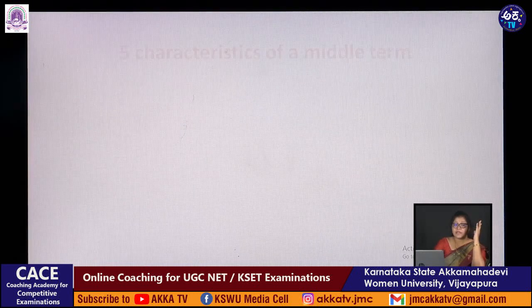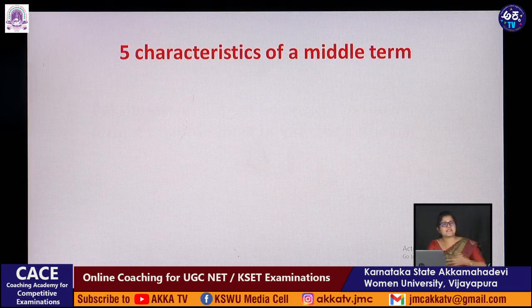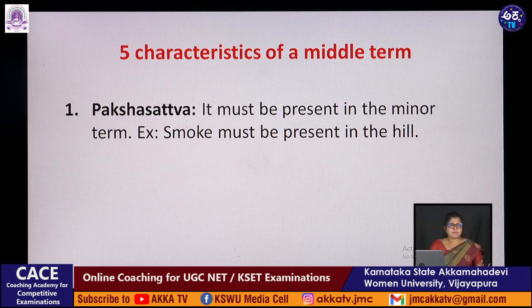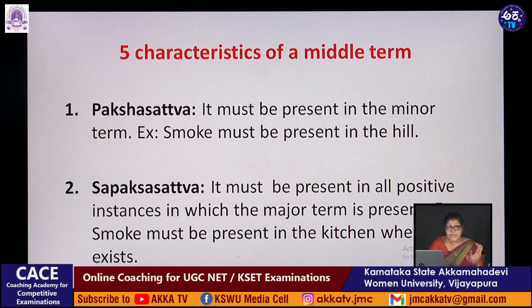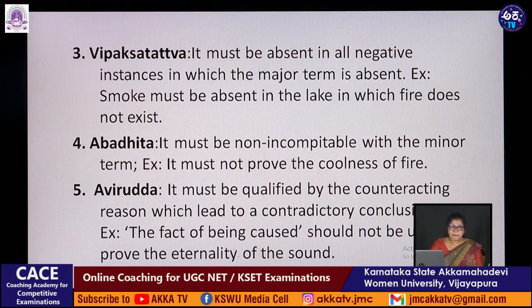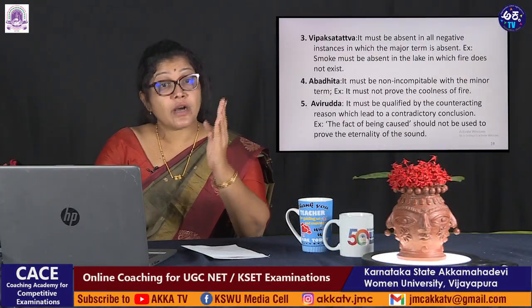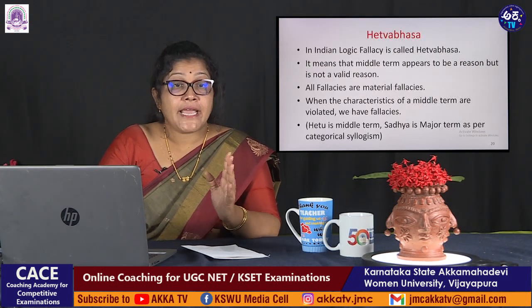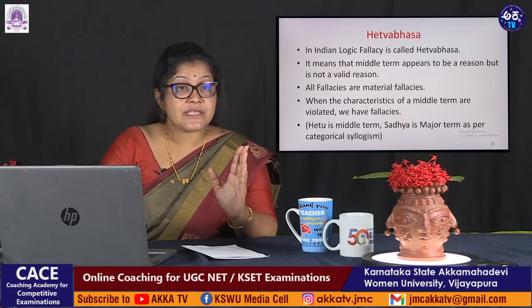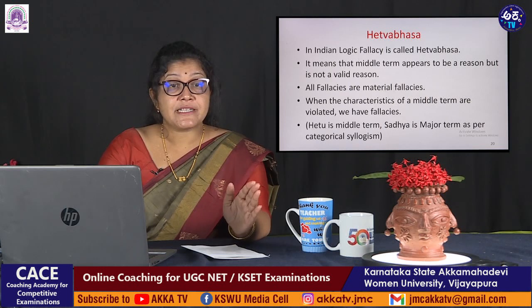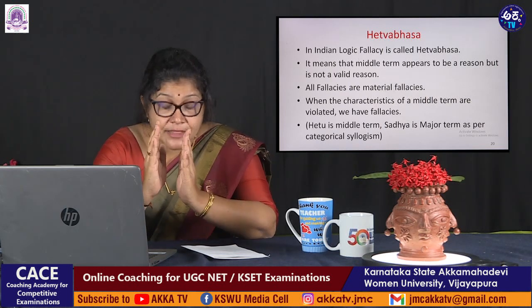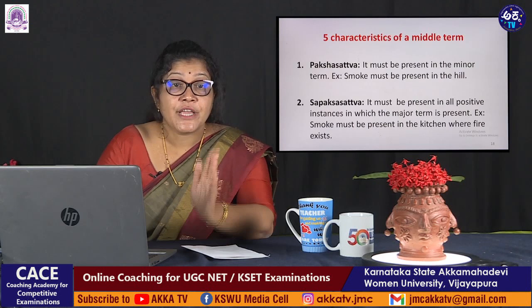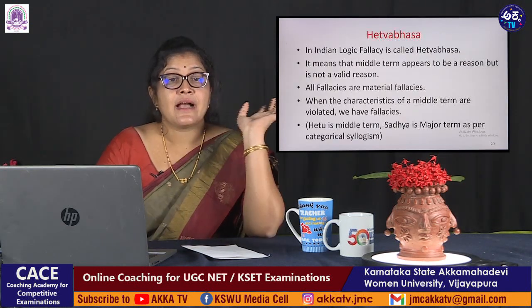There are five characteristics of a valid middle term — its gunalakshanagalu: first, paksha sathva; second, sapaksha sathva; third, vipaksha sathva; fourth, abadita; and fifth, aviruddha. When a hetvabasha (fallacy) occurs, it is because the middle term violates one of these five characteristics. A correct reason is never invalid; all fallacies are material fallacies arising from violated middle term characteristics.